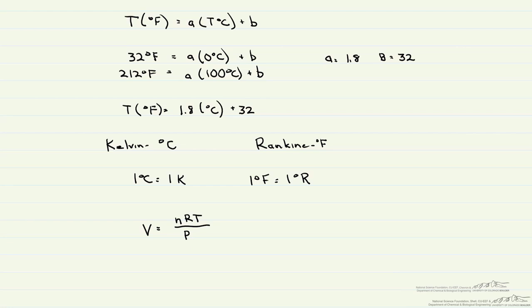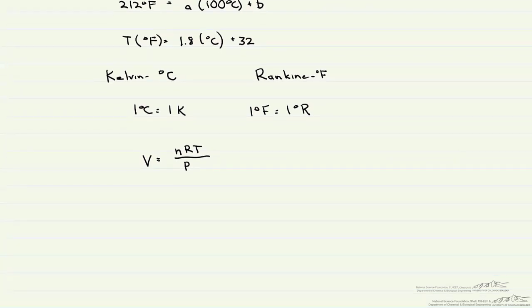But absolute temperature scales are never negative. So how do we relate the absolute temperature scales to Celsius and Rankine? Degrees Rankine is equal to degrees Fahrenheit plus 459.67. Note we don't say degrees Kelvin. Kelvin is equal to degrees Celsius plus 273.15.